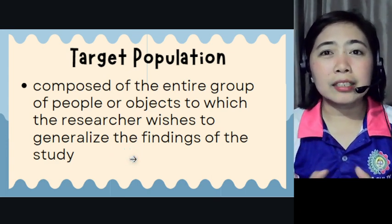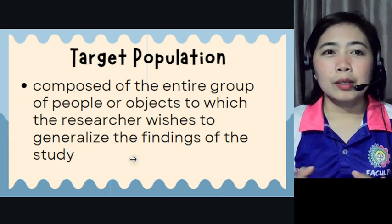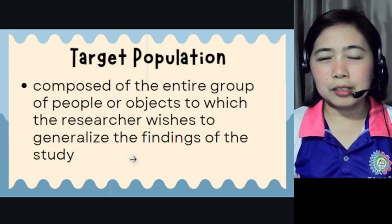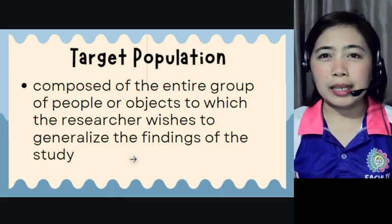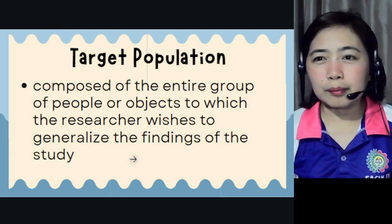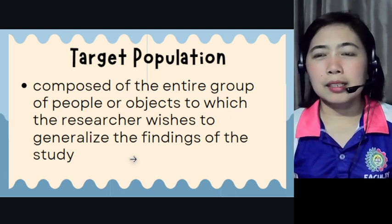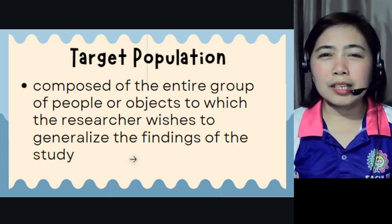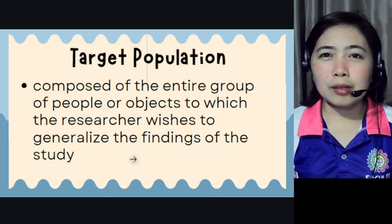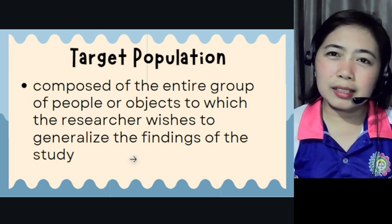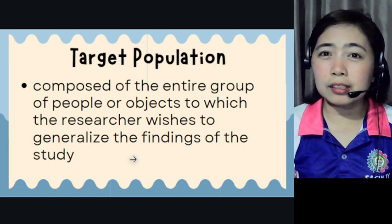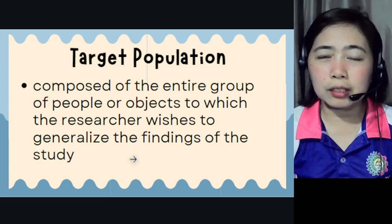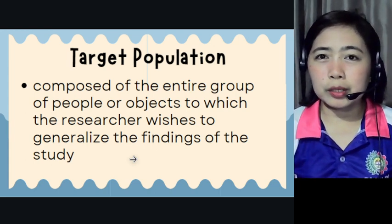Target population is the entire group of people. For example, since most researches handled are humanities-related, they focus on lived experiences — like being curious about how people with disabilities experience discrimination. So their entire group or target population would be PWDs, or persons with disabilities.